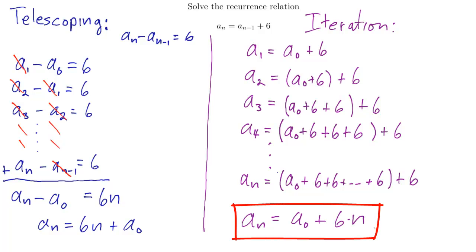And there I have it again. Now, again, I don't know what a_0 is. That's okay. That's just my parameter that would change depending on my initial condition. And in this example, I had to simplify the 6 plus 6 plus 6 a bunch of times just like I did over in the telescoping.